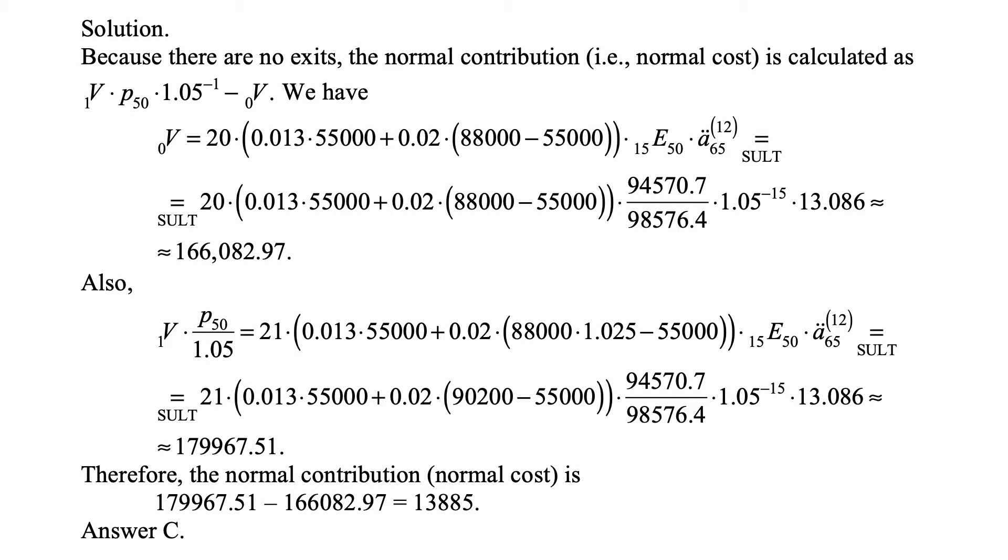and the cost of the annuity is A double dot 65 up to 12. And then 15E50 takes into account the probability of survival until age 65 and the discount factor from age 65 to 50.